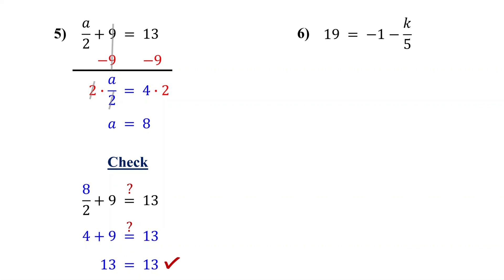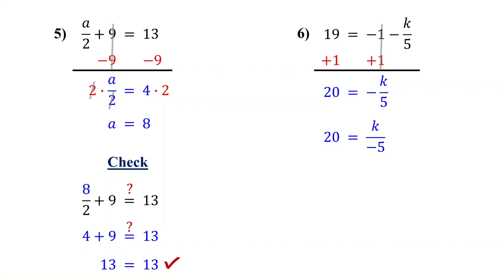Give it a shot. By the way, if you have any questions, please feel free to leave them in the comments below — I would love to help you out. First, isolate the variable term by adding 1 to both sides. On the right, negative 1 plus 1 cancel out, leaving negative k over 5. On the left, we get 20. Now, negative k over 5 is the same as k over negative 5 — the negative sign can go with the numerator, the denominator, or out front; they all mean the same thing. Now isolate k by multiplying both sides by negative 5. On the right, the negative 5s cancel out, leaving k by itself. On the left, negative 5 times 20 is negative 100. So the solution is k equals negative 100.